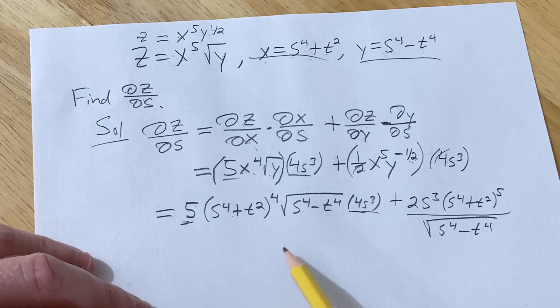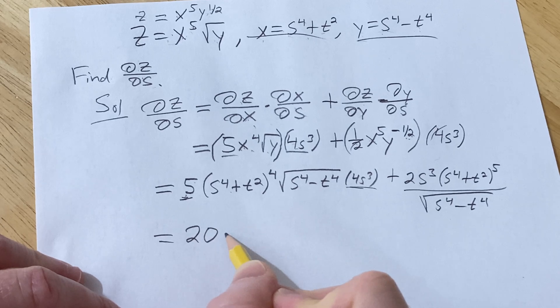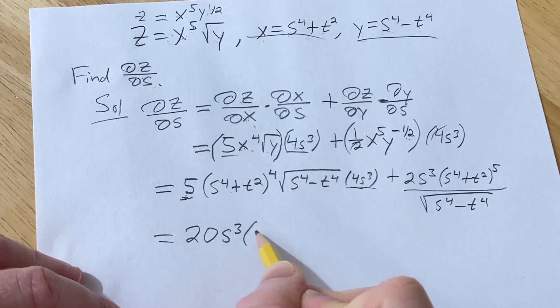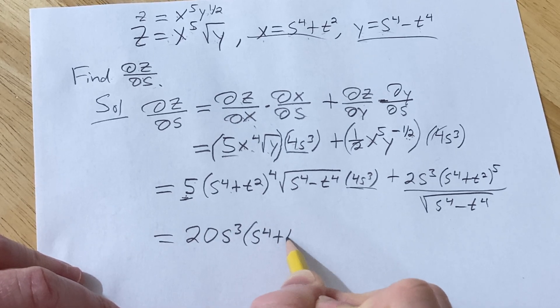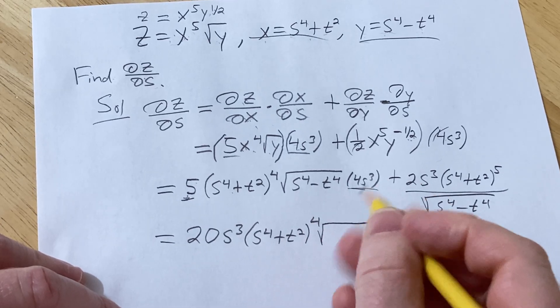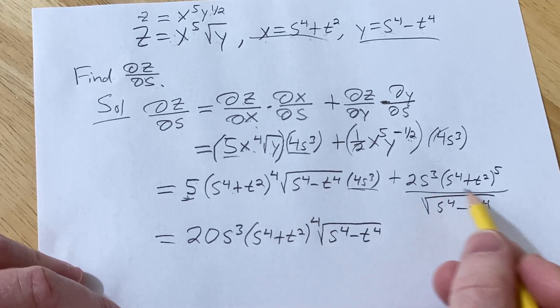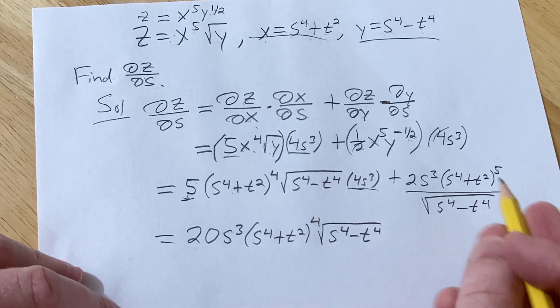So all is good except maybe we need to clean this up here. So let's do that. So in this case this times this is going to be 20. So 20 s cubed, s to the fourth plus t squared to the fourth, square root s to the fourth minus t to the fourth. And then here this is pretty much good.